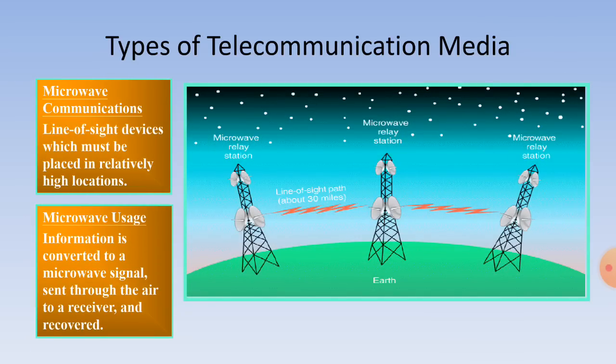Microwave communications uses line-of-sight devices which must be placed in relatively high locations. Microwave usage: information is converted to a microwave signal, sent through the air to a receiver, and decoded there.